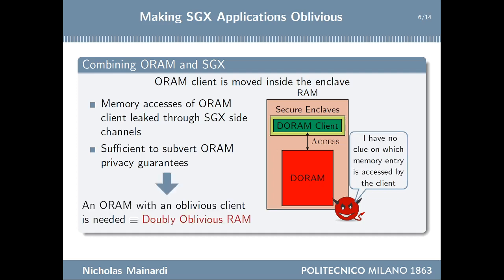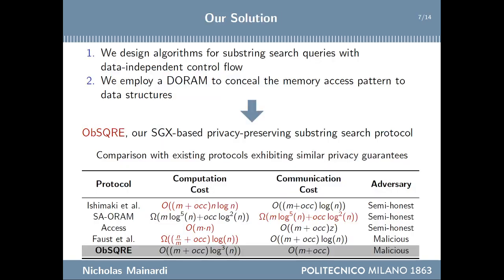In order to recover the desired privacy level, we need to employ an ORAM with an oblivious client, referred to as a double oblivious RAM in existing solutions. In this work, we follow this approach to design our SGX-based privacy-preserving substring search protocol, which is called Obscure. It relies on two main building blocks: our own oblivious algorithms for substring search queries with data-independent control flow, and the adoption of W-oblivious RAM to conceal memory accesses. By comparing Obscure with existing solutions having similar information leakage, Obscure is the only one with optimal communication cost and also has the smallest computational cost.